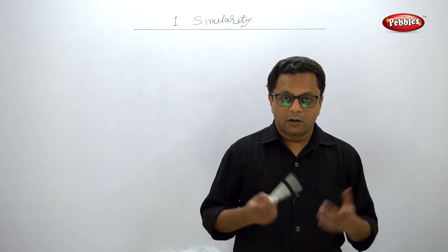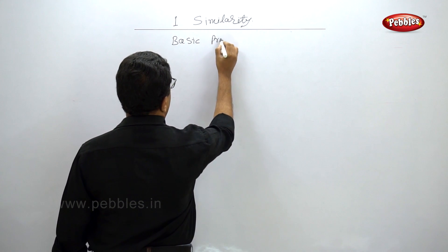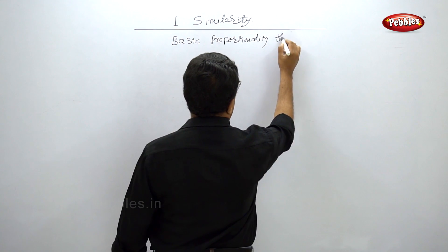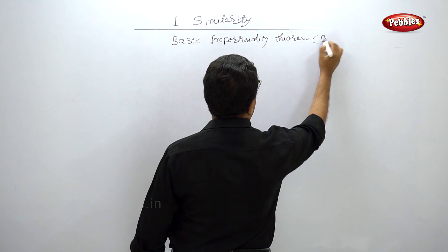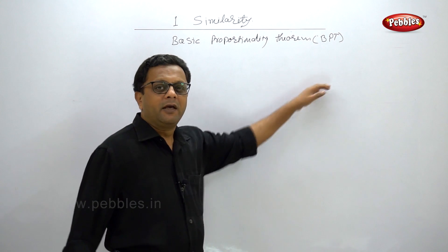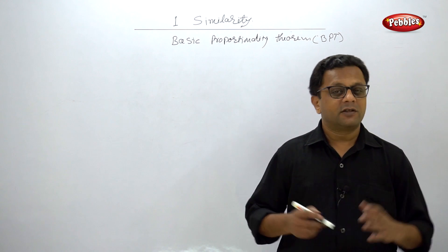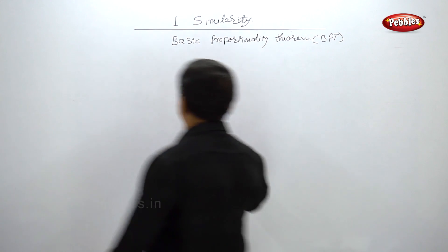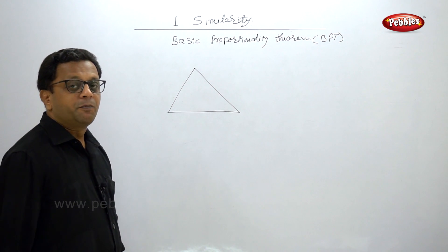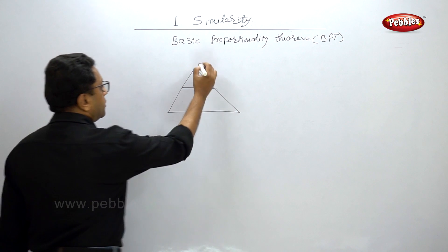Hello friends, welcome back. Now we are going to learn the Basic Proportionality Theorem — in short, you can call it BPT. When you want to give a reason, you can simply write 'by BPT'. Now, what does the Basic Proportionality Theorem say? This is very simple to understand. Suppose we have a triangle and there is one line which is parallel to one of the sides of the triangle — let us say this is the line which is parallel to the base.